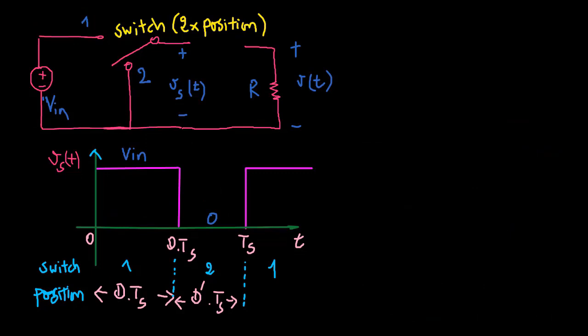The switch reduces the DC component of the voltage. The switch output voltage VS has a DC component that is less than the converter DC input voltage VN.